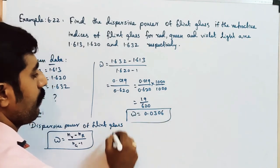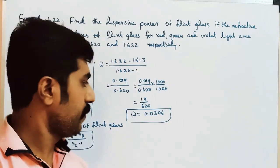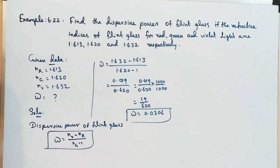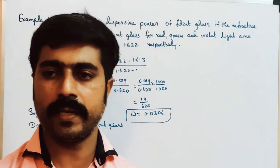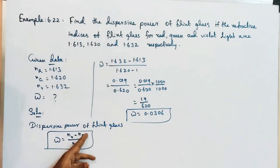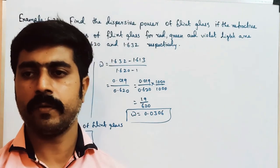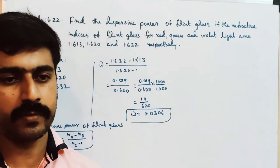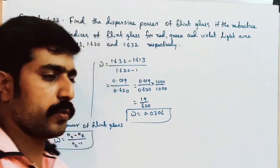Dispersive power of flint glass — what is the unit? Since refractive index is a ratio, dispersive power is a dimensionless quantity. So this is the 2 mark solution.